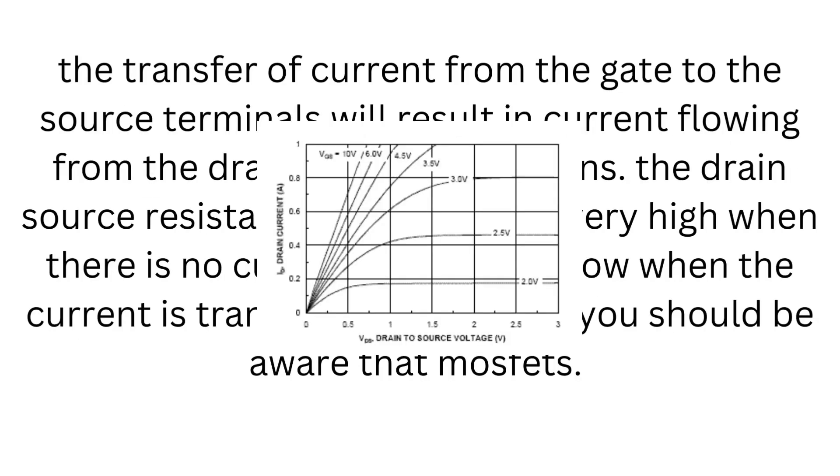The transfer of current from the gate to the source terminals will result in current flowing from the drain to the source pins. The drain source resistance will ideally be very high when there is no current flowing and low when the current is transmitted.